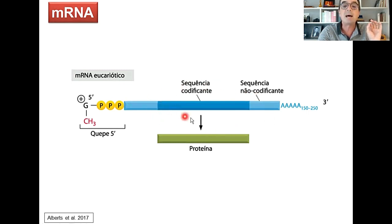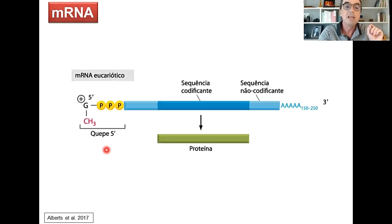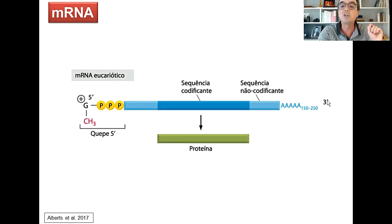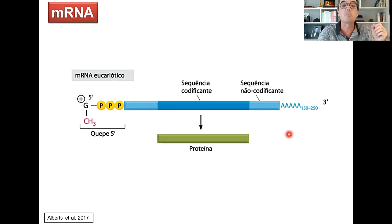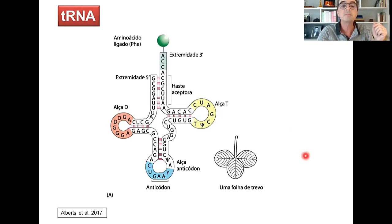Uma molécula de RNA mensageiro madura contém uma parte chamada sequência codificante, que contém o código para a tradução em proteínas. Na extremidade 5', que poderíamos chamar de início do RNA mensageiro, existe um nucleotídeo especial de guanina metilada que chamamos de CAP ou capacete. Na outra ponta, na extremidade 3', existe uma cauda poli-A, uma longa cauda formada de nucleotídeos de adenina. Esses dois terminais ficam protegidos e são o sinal de que esse RNA mensageiro está maduro e pronto para migrar para o citoplasma e ser traduzido em proteína.